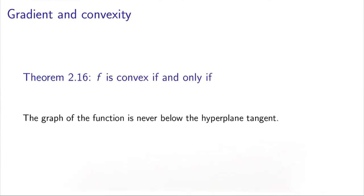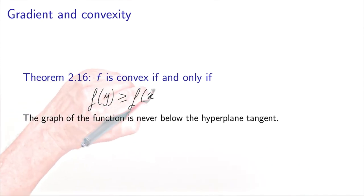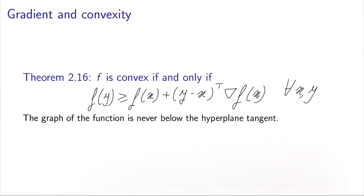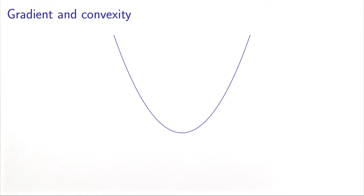The last property is the relationship between the gradient and convexity. We saw that convexity is a very important geometrical property of a function, and the gradient can tell us something about it. Specifically, a function f is convex if and only if f of y is always greater than or equal to f of x plus the gradient of f at x transposed times (y minus x). This says the graph of the function is never below the tangent hyperplane. Geometrically, if we calculate a tangent at any point, the function is always above the tangent — and this characterizes a convex function.